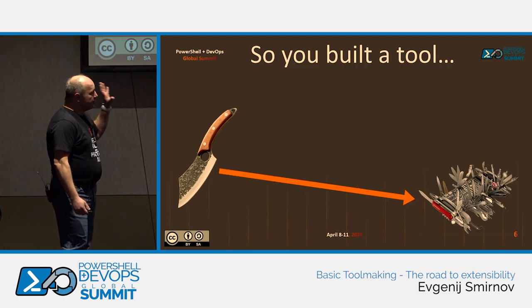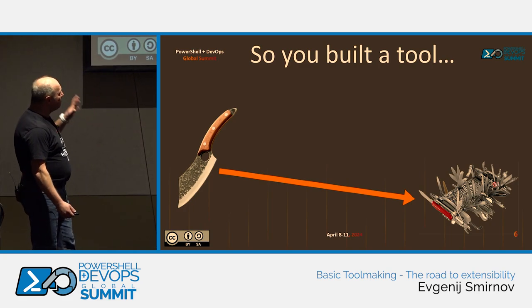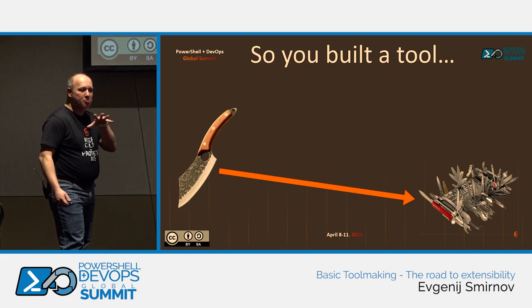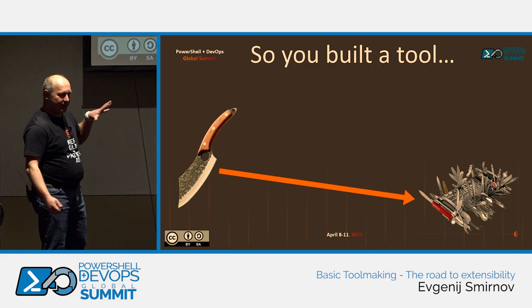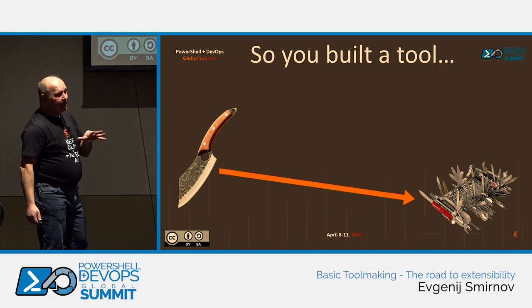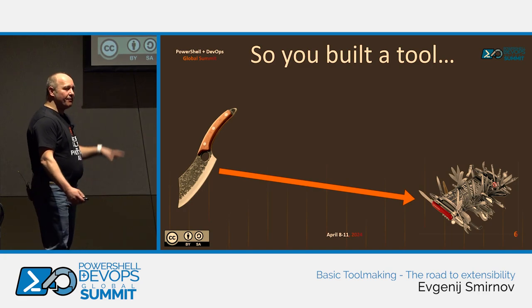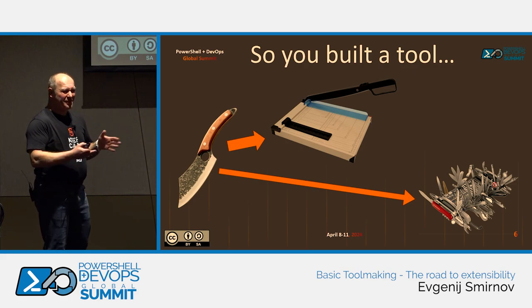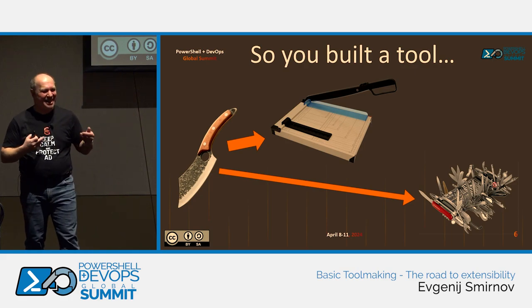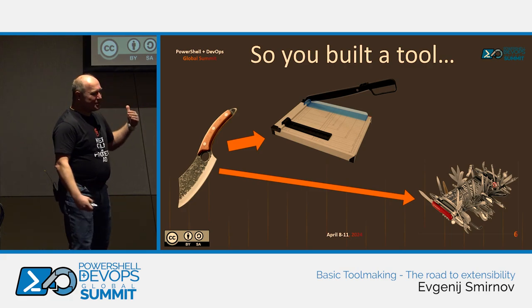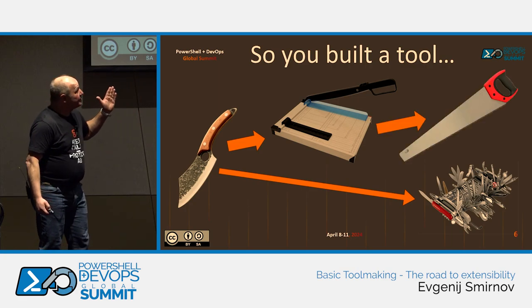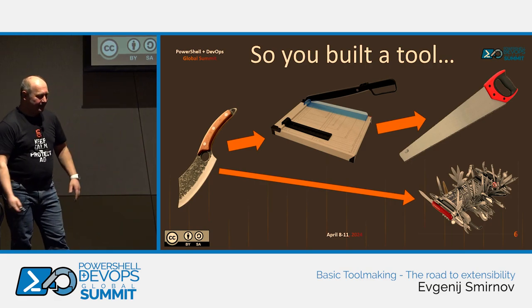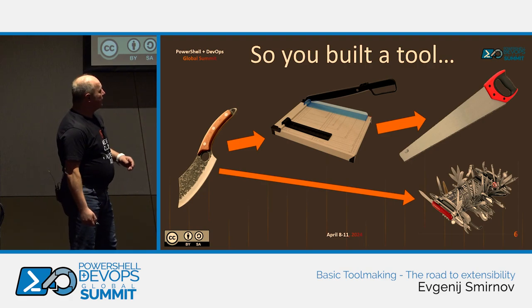Functionality is just one of the three dimensions of extensibility. Say you made a script that produces a really useful report out of some SQL database that your organization has. And this has been running for a while, and then that other department appears to have that same sort of data but in a Postgres database. They come to you and say 'we saw that nifty report the SQL guys have, could we get that too?' A different target. Same functionality, different target. And then there is that third department who run Oracle, and so on and so forth. You end up knowing more about databases than the guys who actually run them.